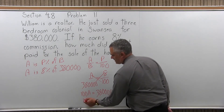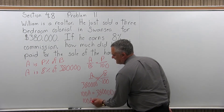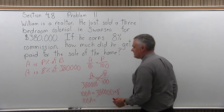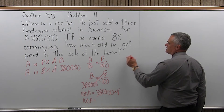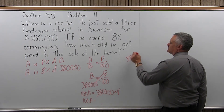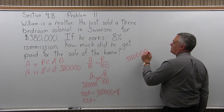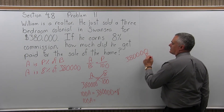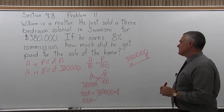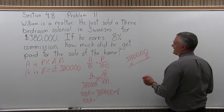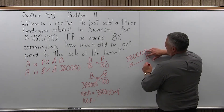So that will be 100A equals — 380,000 times 8 is not a multiplication most people do easily in their head. If you can use a calculator for this, it would be a good thing to do. If not, just go off to the side.